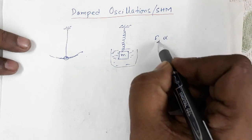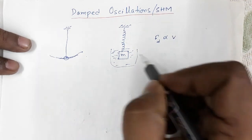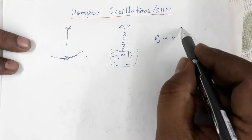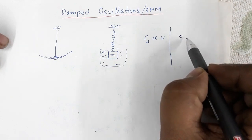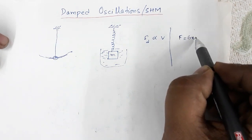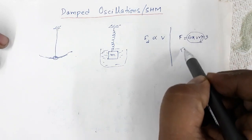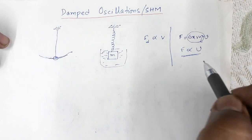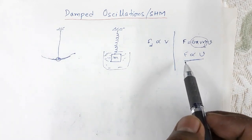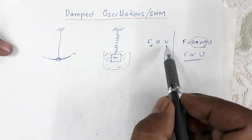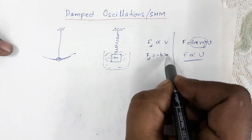The damping force is directly proportional to the velocity of the moving body. You may recall Stokes' law, where the viscous force is given by F = 6πrηv, meaning viscous force is directly proportional to velocity. This damping force is just like the viscous force — it is a motion-opposing force. So the damping force can be written as Fd = −bv.